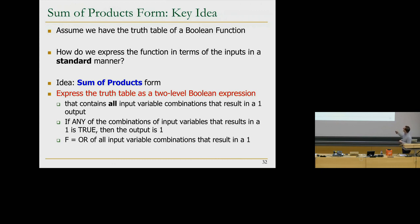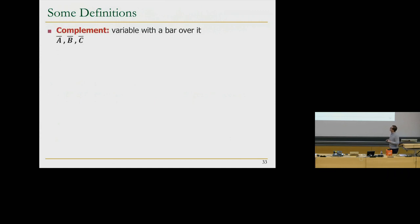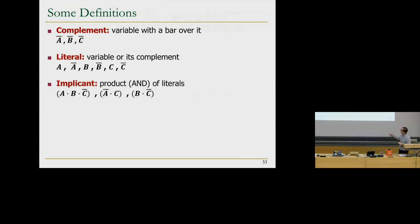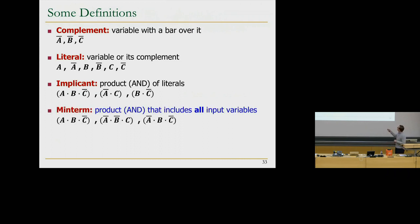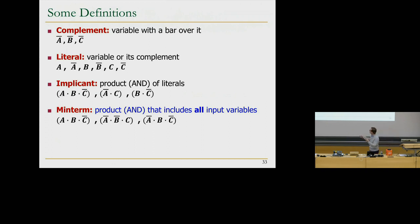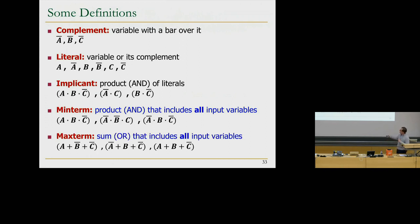Let me define some terms. A complement is a variable with a bar over it. A literal is a variable or its complement. An implicant is a product (AND) of literals — for example, A-bar · C. A minterm is the product that includes all input variables — we want to express every function with its minterms, meaning the product includes all input variables. For a three-input function, A AND B AND C-bar would be one example of a minterm.